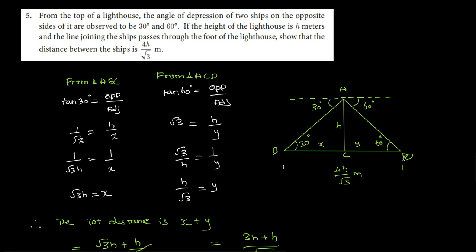Next we will take triangle ACD. So again here tan 60 equals opposite by adjacent. Opposite side is H, adjacent side is Y. Tan 60 value is root 3, so root 3 equals H by Y.